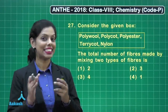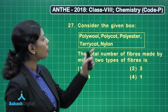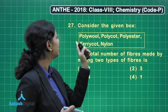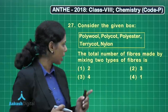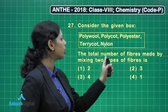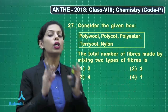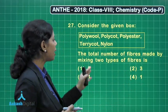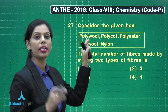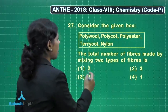Question number 27: a box is given containing poly wool, polycott, polyester, terricot, and nylon. We have to identify the total number of fibers made by mixing two types of fiber. First, poly wool is a mixture of polyester and wool, so it is a mixed fiber.